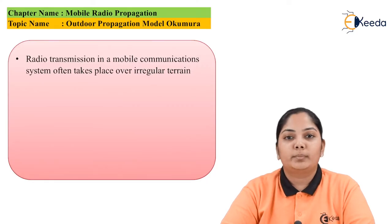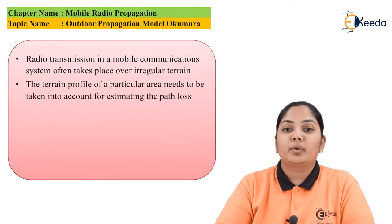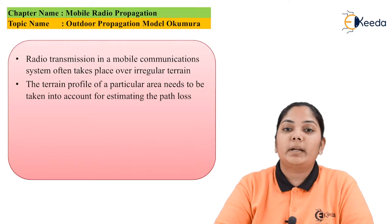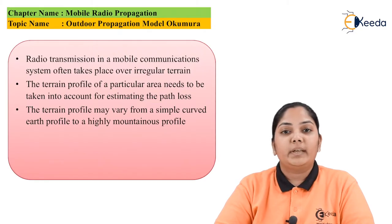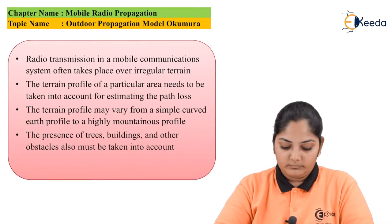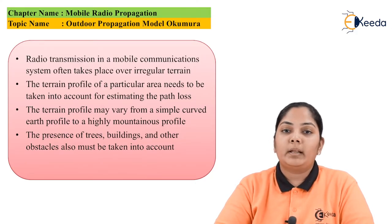The radio transmission in mobile communication takes place over an irregular terrain. The terrain profile of a particular area needs to be taken into account for estimating the path loss. The terrain profile may vary from a simple rounded earth profile to a highly mountainous profile. The presence of trees, buildings, and other obstacles must also be taken into consideration while estimating the path loss.